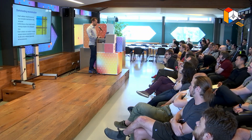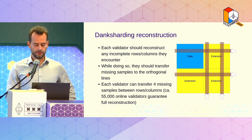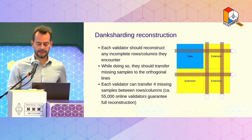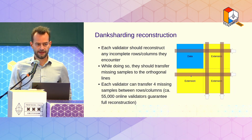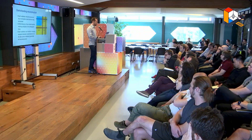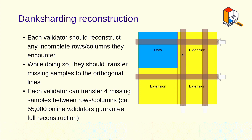The second nice property is that we can use the validator set for reconstructing unavailable data. Because we have overlap between rows and columns, validators can use what they sample to fill in the gaps. If everyone only downloaded rows and only 50% of the rows are available, we'd have no way of filling in the remaining 50%. But because every validator downloads some rows and some columns, there would always be some overlap. If 50% of the rows are available, we can actually get all of the columns, and then from the columns we can reconstruct the missing rows. That provides distributed reconstruction.